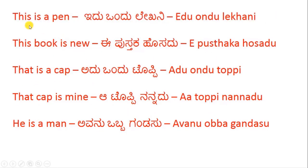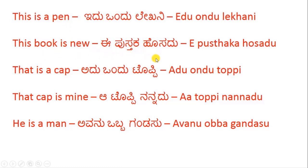Let us see a few examples. 'This is a pen' — Idu wundu lekhani. Idu is this, wundu is 'a,' lekhani is pen. 'This book is new' — Ee pustaka hosadu. Pustaka is book, hosadu is new.